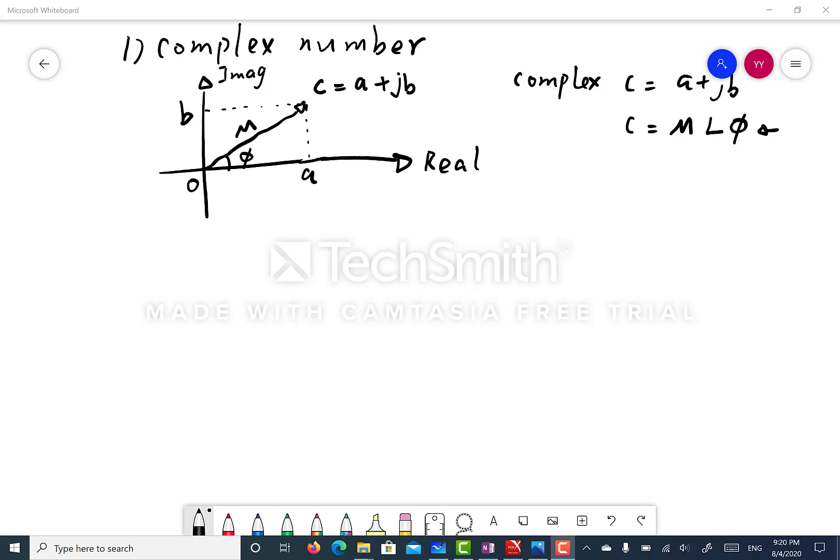There are several ways to represent the same complex number c. c equals a plus j times b. This is known as rectangular form.